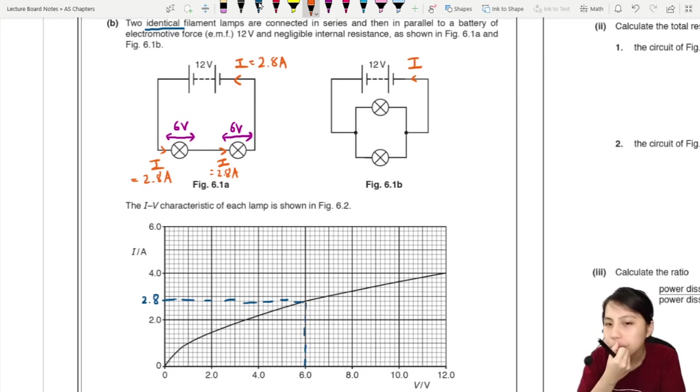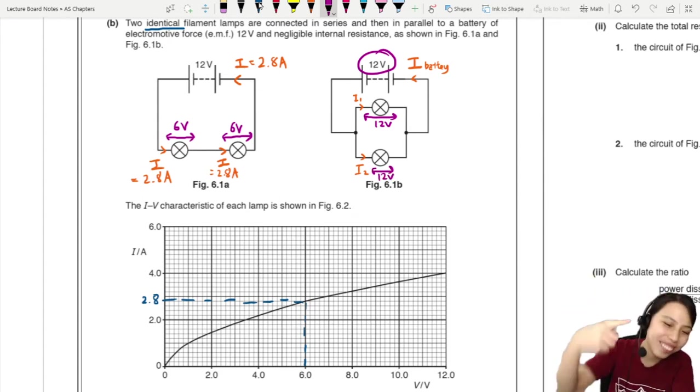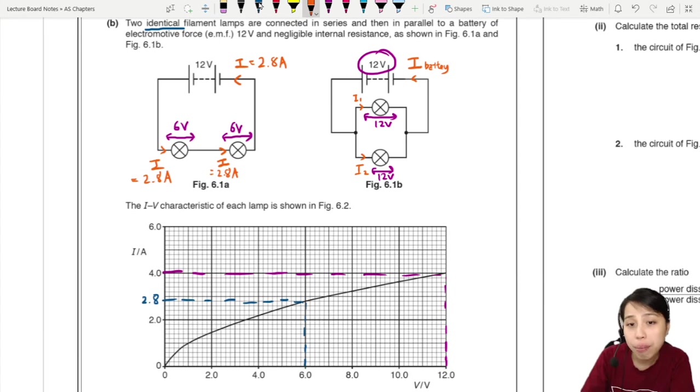How about the second one? Can we use the same method? Cannot. The current in the battery actually will split into two parts. One for the first lamp, one for the second lamp. So we cannot use a similar method. But the fact is, if there are two lamps in parallel, if 12 volts is applied, then each of them get 12 volts. Second one also get 12 volts.